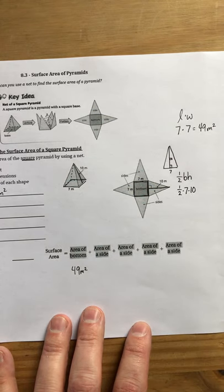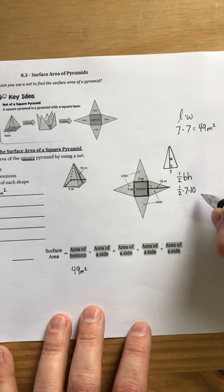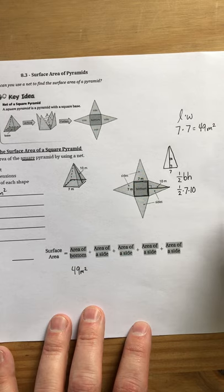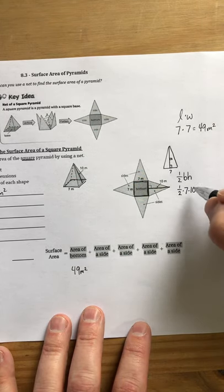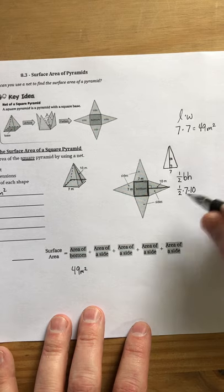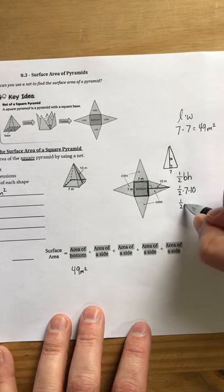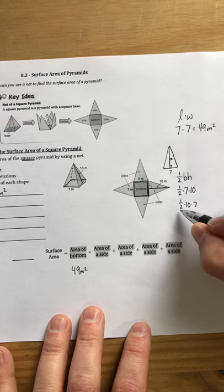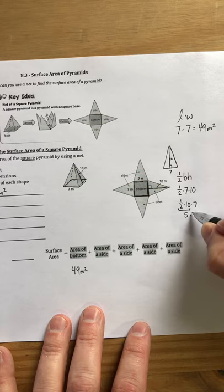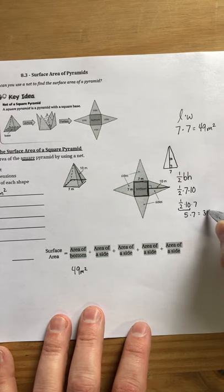Now, I could use my associative property and choose to multiply the 7 times 10 first, or I could use my commutative property and switch the order of the 10 and the 7 and instead write it like this because that allows me to do half of 10 is 5, and 5 times 7 equals 35.